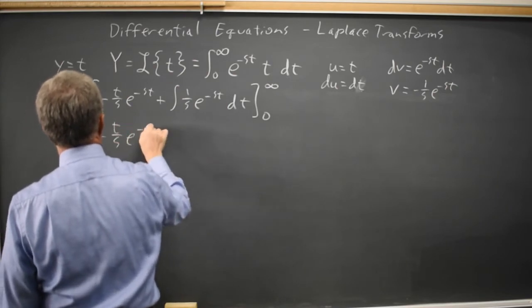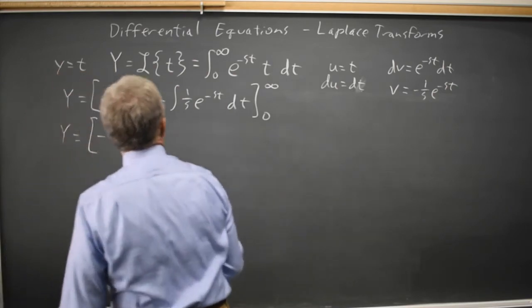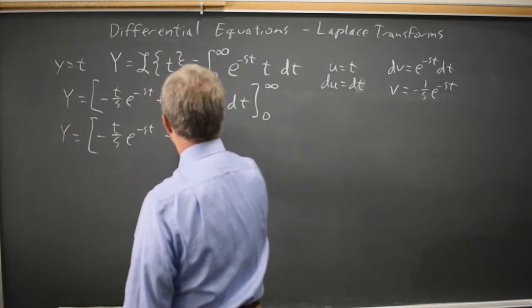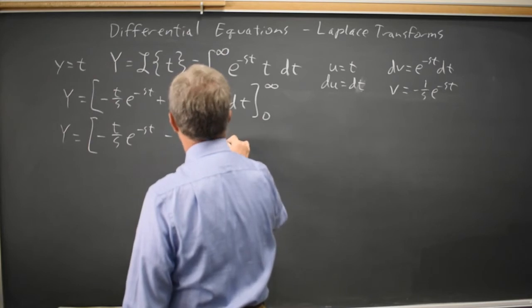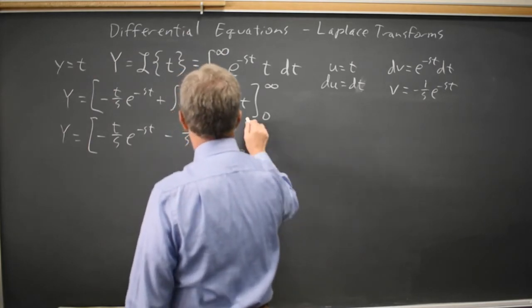Our integral is minus 1 over s squared e to the negative st, and that's from zero to infinity.